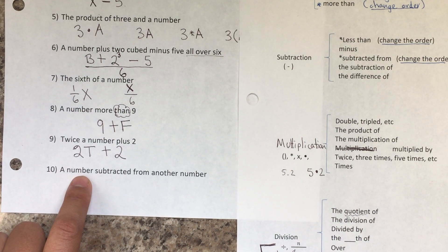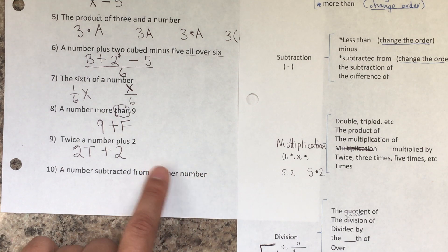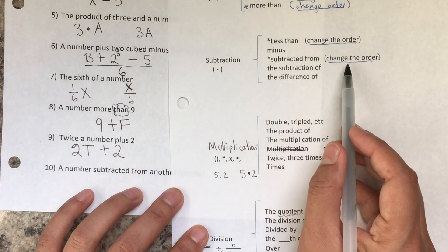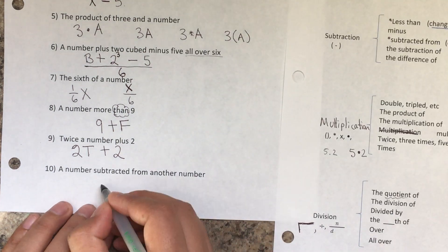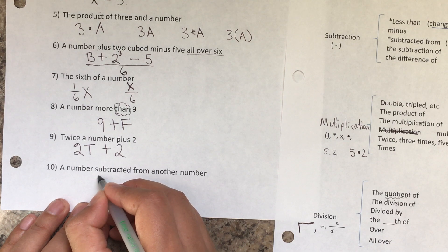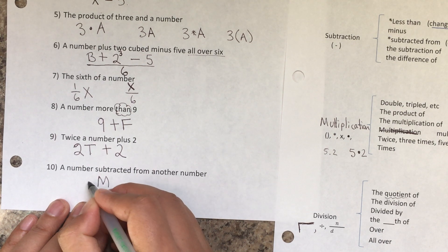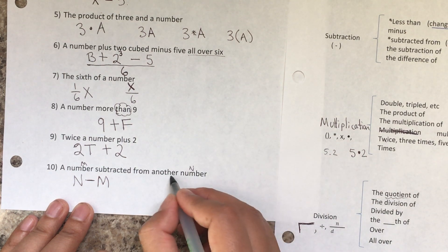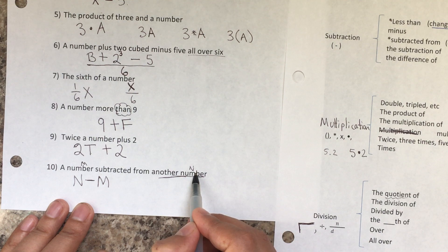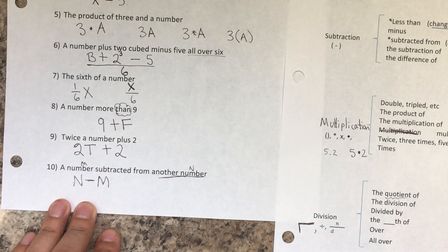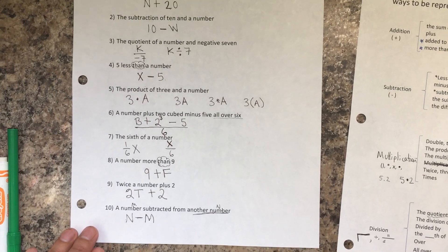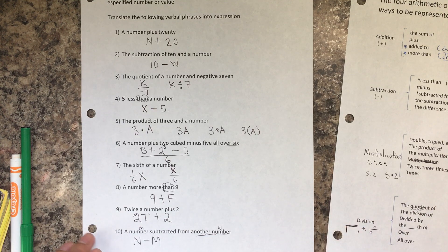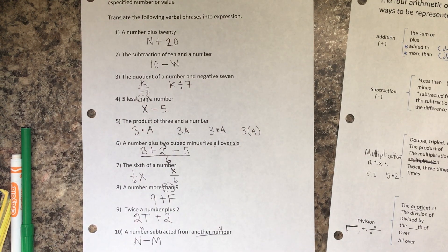The last one: a number subtracted from another number. When it says another number, that means they are not the same number. Let's see—a number subtracted from another number. This refers to m, and this refers to n. M is subtracted from n. With this, you're able to complete the next assignment, which is page two, and I hope you have fun. You can pause the video now if you want to take note.